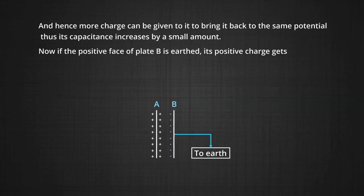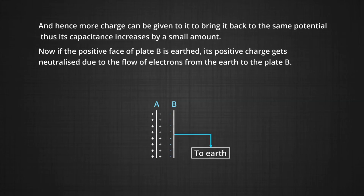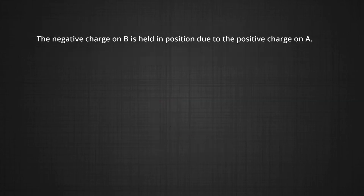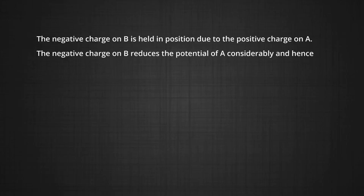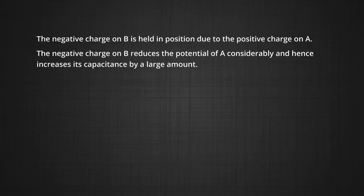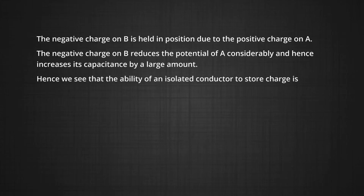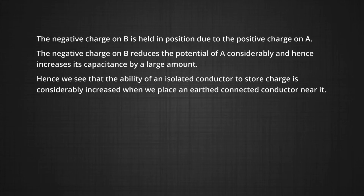Now, if the positive face of plate B is earthed, its positive charge gets neutralized due to the flow of electrons from the earth to plate B. The negative charge on B is held in position due to the force of attraction by the positive charge on A. The negative charge on B reduces the potential of A considerably, and hence increases its capacitance by a large amount. Thus, the ability of an isolated conductor to store charge is considerably increased when we place an earth-connected conductor near it.